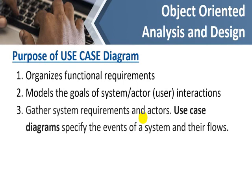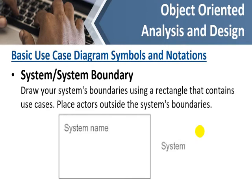The purposes of a use case diagram are: first, it organizes the functional requirements; second, it models the goals of system-actor interactions and defines the particular tasks performed by the system or the user; third, it helps gather other system requirements and actors. Use case diagrams specify the events of a system and their flow — which actor can perform what actions and in which sequence.